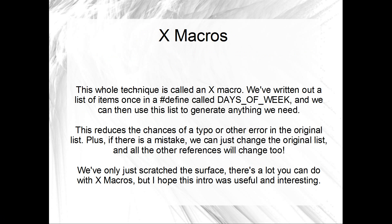So this whole technique is called X macros — both the macros. The list itself is a big part of how X macros work, and then there is the macro called X itself. We've written out our list of items once, which is really useful. We could change the original define of our list to include new days of the week if they happen to be invented, or get rid of Sunday and Saturday, and every instance throughout our project will be updated automatically. This reduces the chances of a typo, but also makes it really easy to alter the list. We've pretty much only just scratched the surface of X macros today, but going deeper would probably take about three hours, so we'll call it a day. X macros are very, very cool.